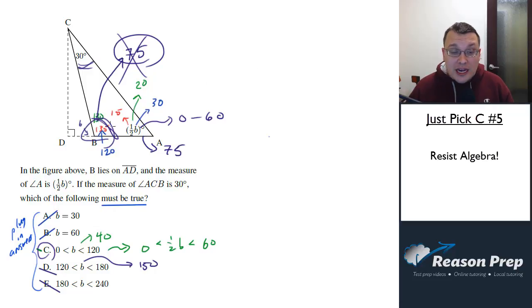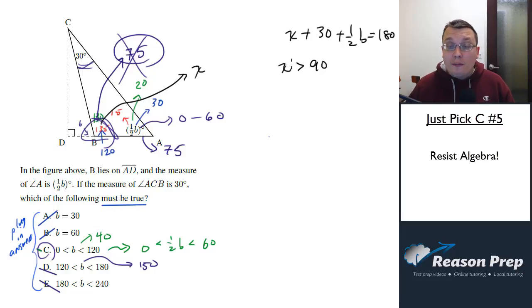Now how would you do this algebraically? Well, you know that these three angles have got to add up to 180. So I'm going to call this one temporarily X. So I know X plus 30 plus 1 half B has got to equal 180. I also know from what we've discussed earlier that X has got to be greater than 90, it's got to be obtuse. So from that, what can we learn? Well, if I rearrange this, I'm gonna get X is equal to - I'm gonna move those to the other side - 180 minus 30 minus 1 half B.